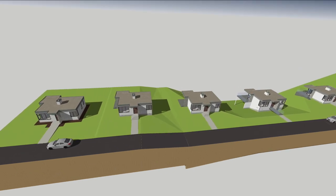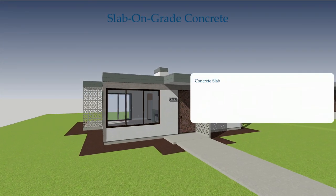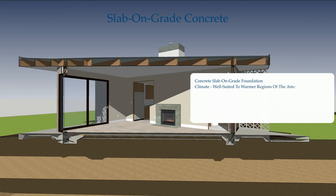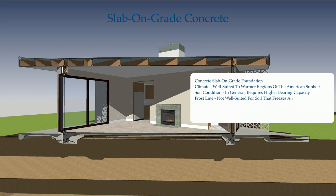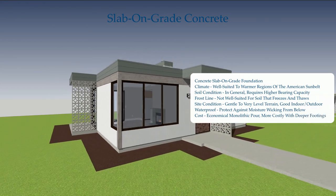Let's quickly review the essential aspects for North American residential foundation design. Concrete slab-on-grade foundation: Climate — well suited to warmer regions of the American Sun Belt. Soil condition — in general, requires higher bearing capacity. Frost line — not well suited for soil that freezes and thaws. Site condition — gentle to very level terrain, good indoor-outdoor relationship. Waterproofing — protect against moisture wicking from below. Cost — economical with a monolithic pour, but more costly with deeper footings.